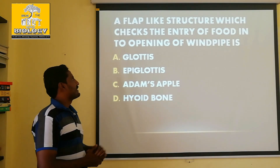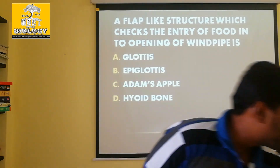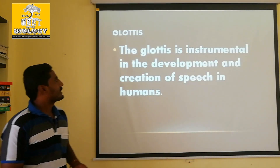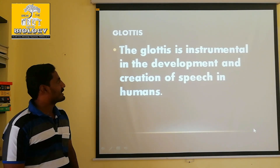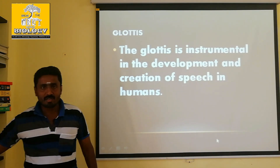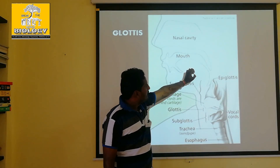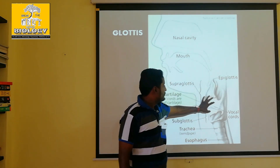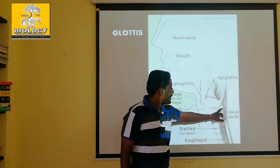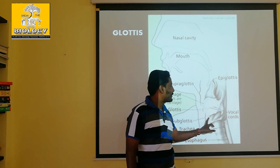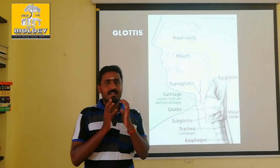So first, glottis is a structure. Glottis is instrumental in the development and creation of speech in humans. Normally when we speak, glottis is a region in the throat area. In this region we have a voice box — it is the vocal cord. The sound is produced at the correct frequency.